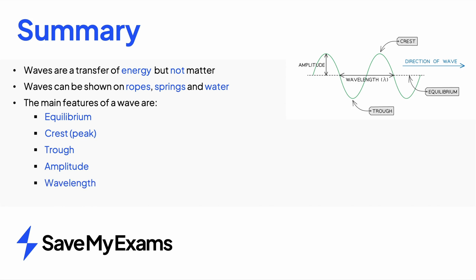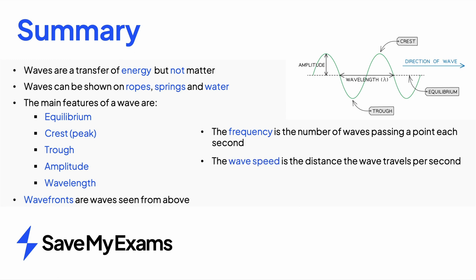The wavelength, the distance of one full cycle of the wave. Wave fronts are waves seen from above. These are often vertical lines representing the peaks. The frequency of the wave is the number of waves passing a point each second. The wave speed is the distance the wave travels per second. The wave speed, frequency and wavelength are related by the wave equation. The wave speed equals frequency times by the wavelength.